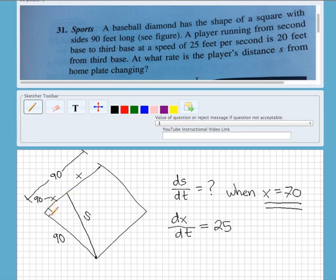But then again, this is changing. This dynamic here is changing, so you can't just put 20 here because it's changing as the runner travels.